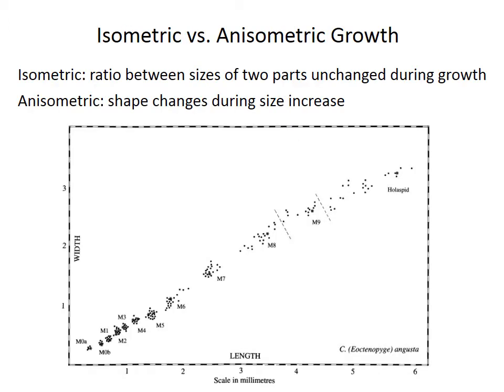In some cases of growth, different parts of the organism can grow at the same rate, and therefore the ratio between two measurements is constant or remains unchanged during life. That's called isometric growth, and it appears as a linear trend on a bivariate plot, like the one here showing length versus width of a trilobite cephalon. However, growth in the species shown by the dots does not fall along that linear trend. At larger sizes, the width increases more slowly than the length, resulting in shape change — the head becomes longer relative to its width as it becomes an adult. Non-linear plots like this are examples of anisometric growth, where shape changes during ontogeny.